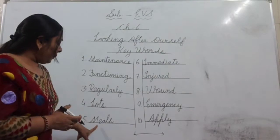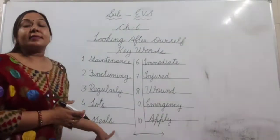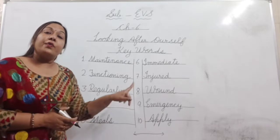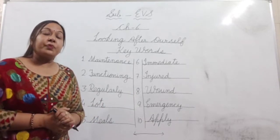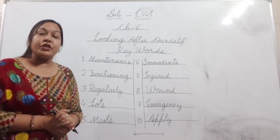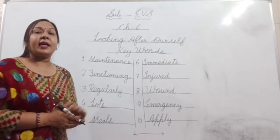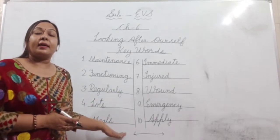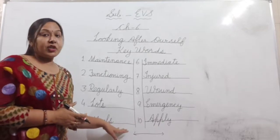Number five: m-e-a-l-s — it's meals. Meals means food, khana. We should take our meals at proper time. Hummye apna meal ya khana proper time pe lena chahiye.